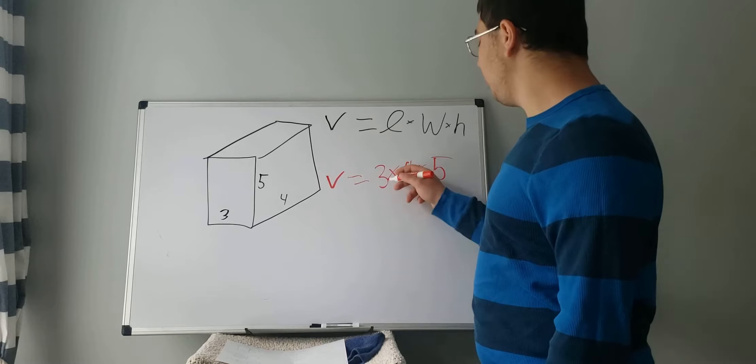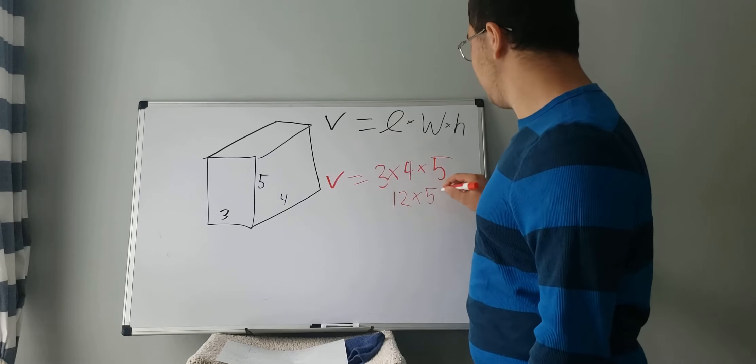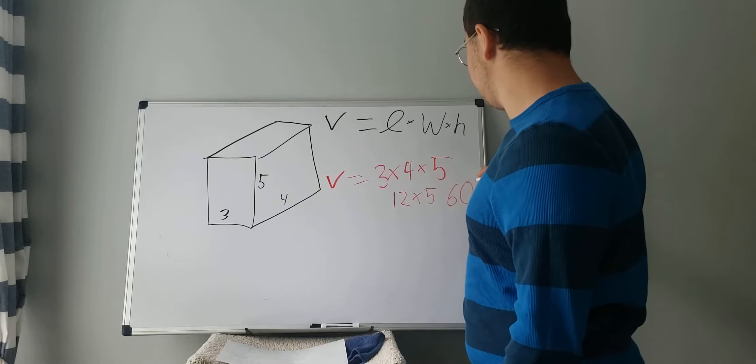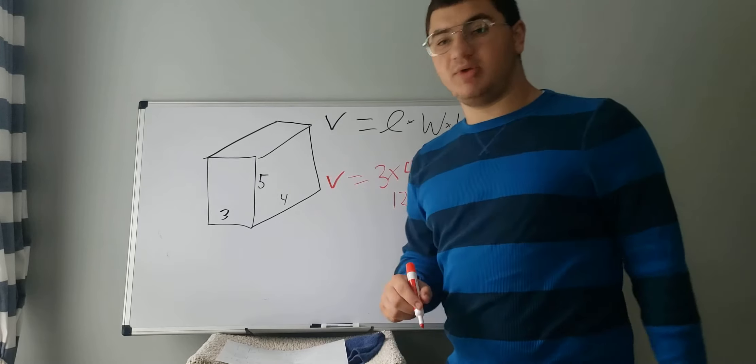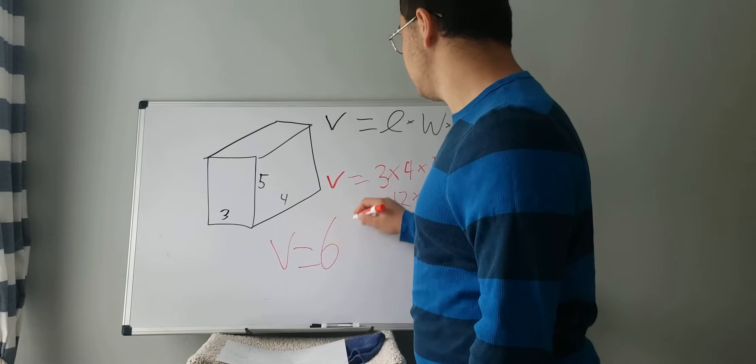So three times four is 12. Just bring it down. 12 times five gives us 60. And that will be your answer. Your volume equals 60.